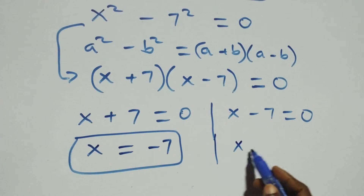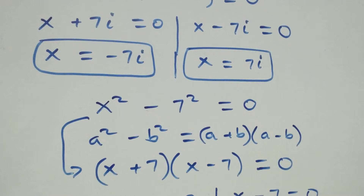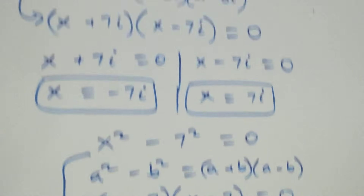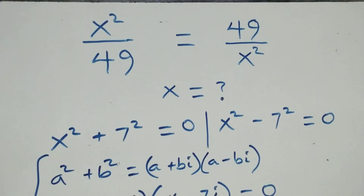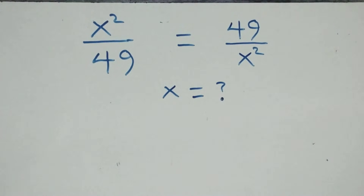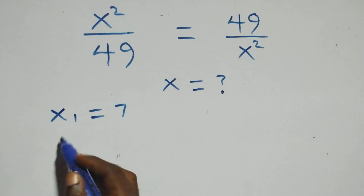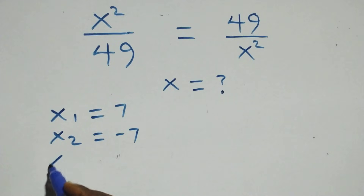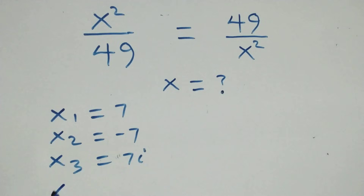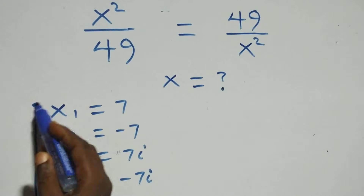And x equals 7, which is also a real solution. So we have two real solutions and two complex solutions. Writing them out: x1 equals 7, x2 equals negative 7, x3 equals 7i, and x4 equals negative 7i — making four solutions altogether.